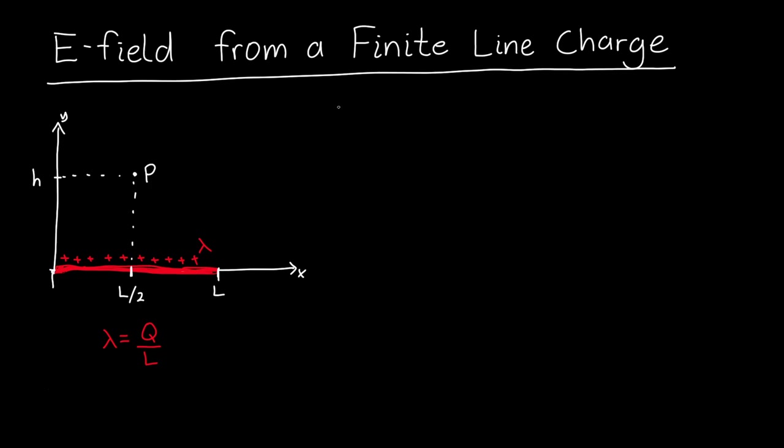So how do we start this problem? First, is there any symmetry? This is the very first question we should always ask when trying to find the answer to these types of physics problems. In this case, yes, there is symmetry. In particular, because there's as much charge on the left as there is on the right, the electric fields will end up canceling each other.